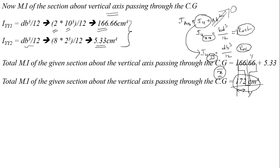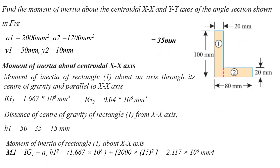Now we solve a second problem with an unsymmetric section. Find the moment of inertia about the centroidal XX and YY axes of the angle (L) section shown in the figure. The section is divided into two rectangles: ABCD (first) and CEFG (second). We must calculate moment of inertia about both XX and YY axes using the parallel axis theorem: IAB = IG + AH².